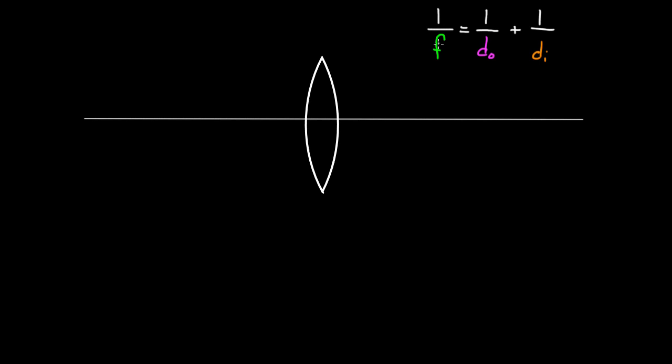When you're dealing with these thin lenses, you're going to have to use this formula right here: one over F equals one over DO plus one over DI. Not too bad, except when are these positive or negative? Let's find out.